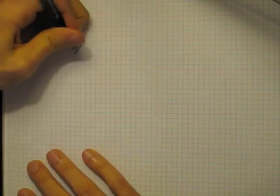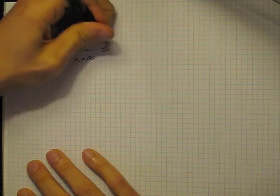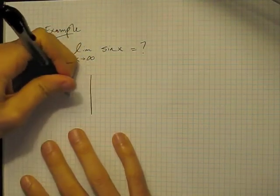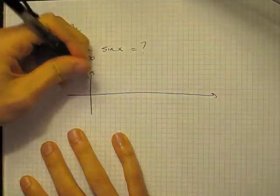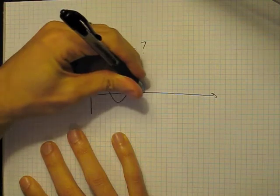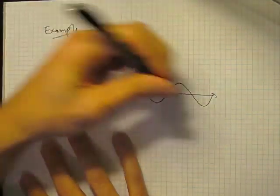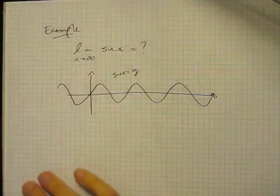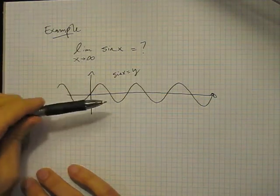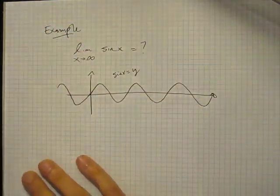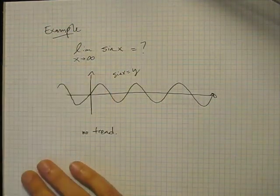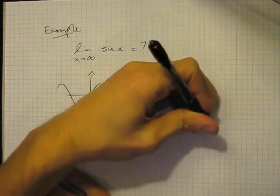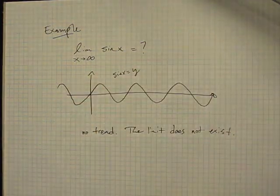Let's take a look at the limit as x goes to infinity of sine of x. Well, what could this be? Let's take a look at the graph of sine of x. We know what this graph looks like — it just oscillates back and forth for all time. We're asking: what's the trending behavior of this function as x goes to infinity? Well, there isn't one. No trend. So the limit doesn't exist in this case.